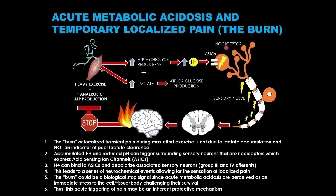There are specialized receptors on these nociceptors that detect mechanical, thermal, and chemical stimuli. One of the chemoreceptors on muscle nociceptors is called ASICs — acid-sensing ion channels. ASICs are triggered when protons accumulate beyond a specific level. Protons can bind to the ASICs and cause them to depolarize the nociceptor. The signals are then transmitted toward the central nervous system in the afferent direction — meaning toward the CNS from the periphery, the periphery being the muscle — and can cause the sensation of burning pain.